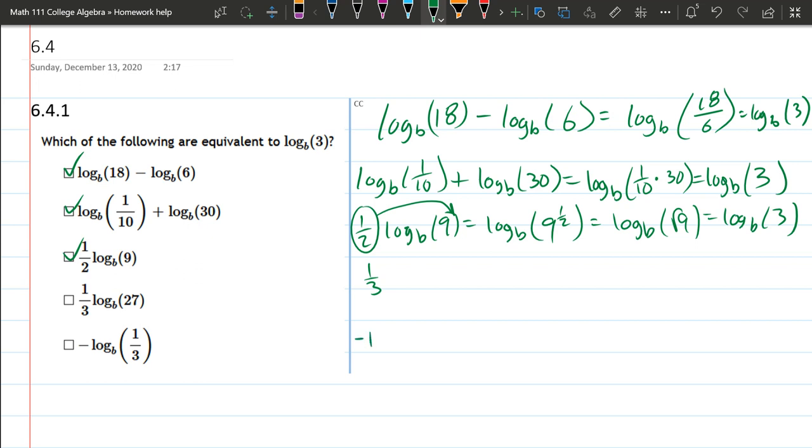We are going to do the last one though. Negative log base b of one-third. How do we treat the negative? Negative is the same as multiplying by negative 1, and we bring that in as a power.